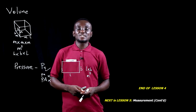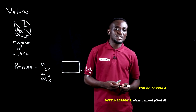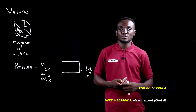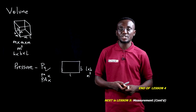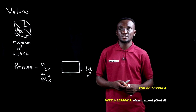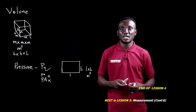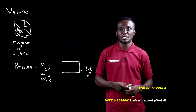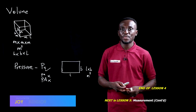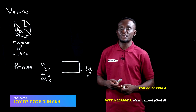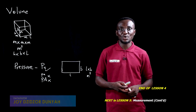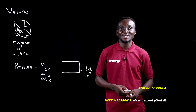In this lesson, we looked at a number of derived units besides the seven fundamental quantities. Some of the derived units and instruments we covered include volume — using the pipette for small quantities and the measuring cylinder for larger quantities of liquid — atmospheric pressure, and electric potential. In our next lesson, we'll continue our discussion on measurements. See you in the next lesson.